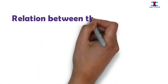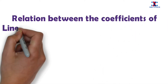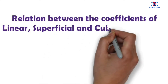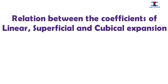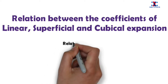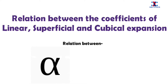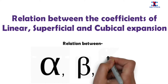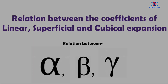Welcome to EV Physics. I am Sunil Saha. In this video you will learn about the relation between the coefficient of linear, superficial, and cubical expansion, which are represented by alpha, beta, and gamma respectively. First we'll derive the relation between alpha and beta, then we will derive the relation between alpha and gamma, and finally we'll get the relation between alpha, beta, and gamma. Now let's move to the content.